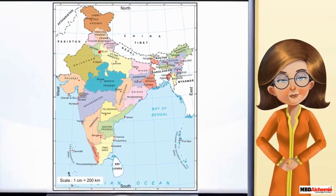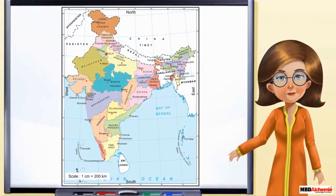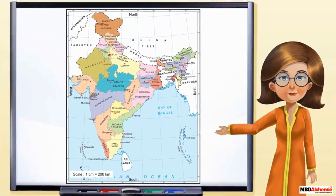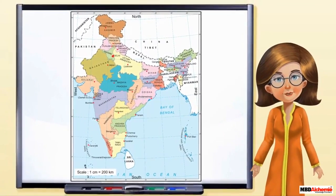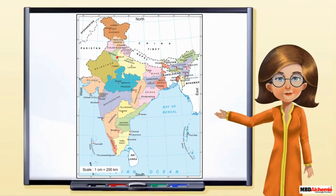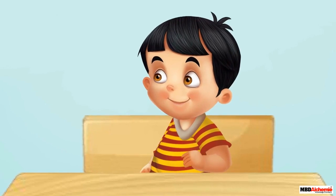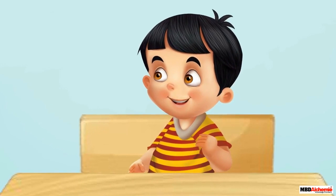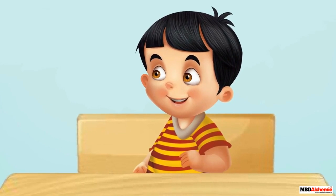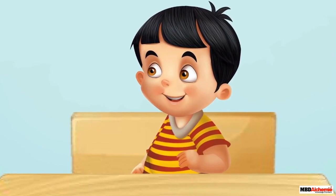Do you know in which direction Jammu and Kashmir is situated from our city Bhopal? Jammu and Kashmir is situated in the north.